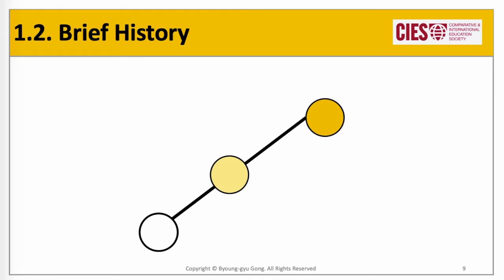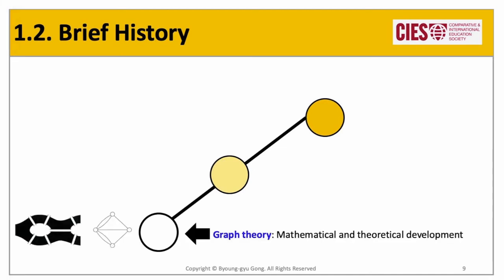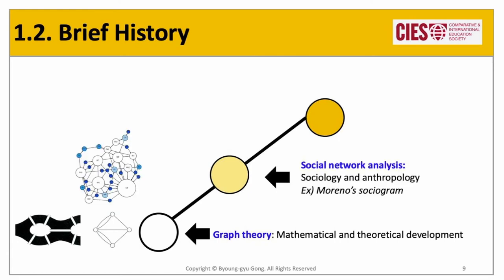There is a line of intellectual history in the development of network analysis. It is largely recognized that network theory started from graph theory, and the famous example is the Königsberg bridge problem. Euler proved there is no single path that can cross each of the seven bridges only once, using a graph abstraction method. From the 1960s to 1990s, social science was one of the most influential fields developing network analysis theories. Moreno's sociogram was the pioneer in social network analysis research, creating a friendship network based on asking students who they wanted to sit next to.